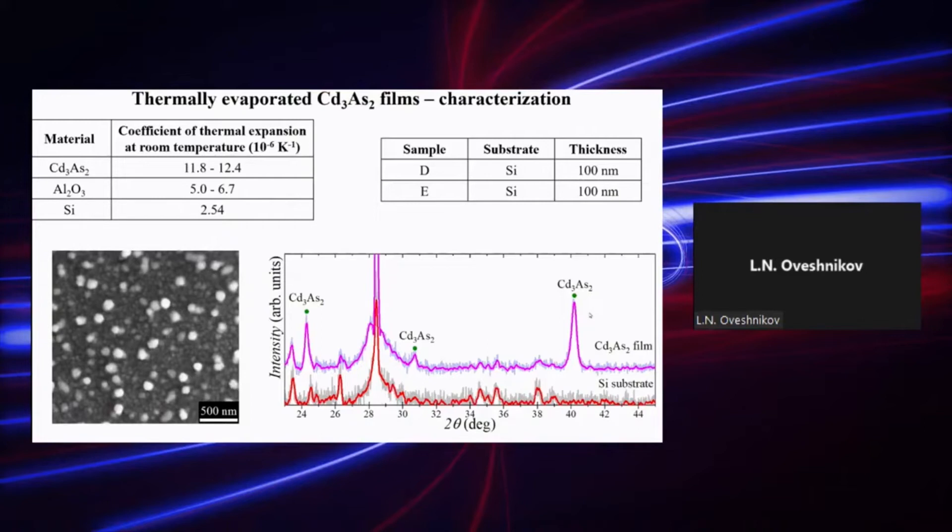Just to verify that this state is not related to details of the sample preparation, we studied yet another set of films obtained with thermal evaporation technique. They were somewhat thicker. Both films were deposited on silicon substrates. X-ray diffraction studies show that there is crystalline cadmium arsenide phase. However, unlike magnetron sputtered films, in this case, we observed peaks which corresponds to a powder diffraction pattern. Therefore, we couldn't distinguish which polymorph modification we deal with.